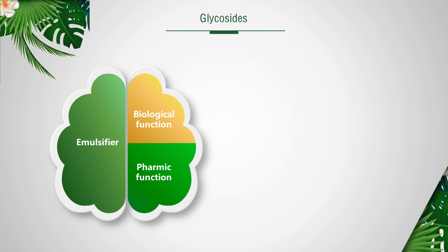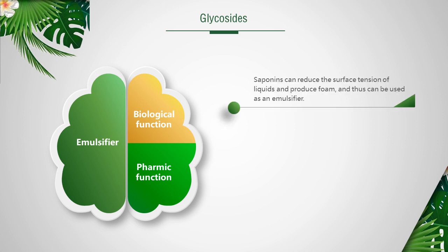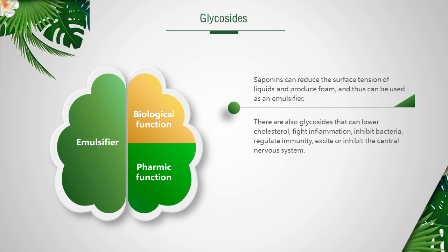A glycoside is a compound formed from a terminal carbon atom of a sugar or a sugar derivative linked to another type of non-saccharide substance. Saponins can reduce the surface tension of liquids and produce foam, and thus can be used as an emulsifier. There are also glycosides that can lower cholesterol, fight inflammation, inhibit bacteria, regulate immunity, and excite or inhibit the central nervous system.